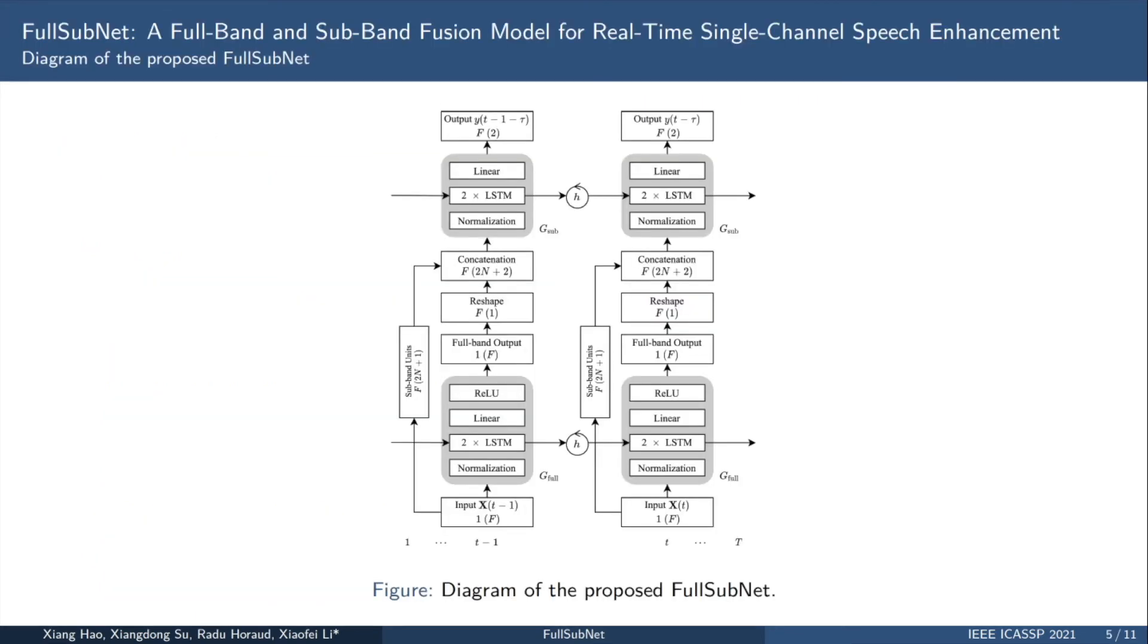Based on the above, we designed a fusion model called FullSubNet with a carefully designed structure. First, a full-band model is used to obtain global information, and then the output of the full-band model is supplied with the sub-band model. The sub-band features of noisy speech are processed frequency by frequency, and then obtain the discrimination of the difference between the stationarity of the speech and the noise, and can focus on local spectral pattern.